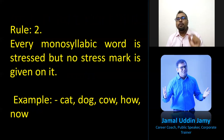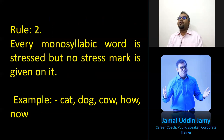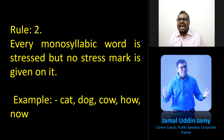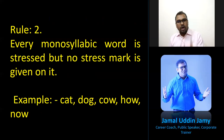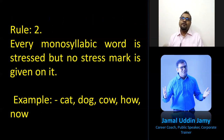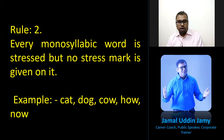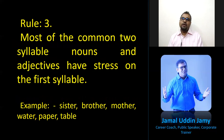Rule number two: every monosyllabic word is stressed, but no stress mark is given on it. Whenever you have a monosyllabic word — like cat, duck, cow, how, now, go, snow — one syllable is there, so it will always be stressed. But you'll not find any stress mark in the dictionary, whether Cambridge or Oxford.